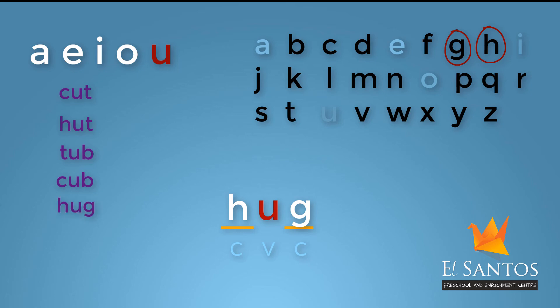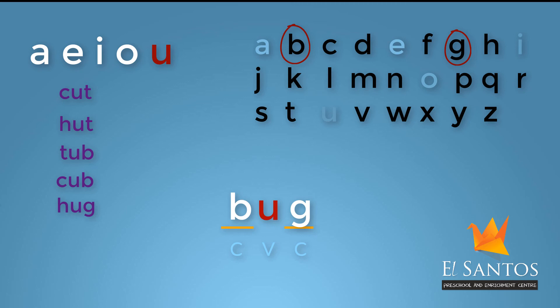For our next word, let's just change the first consonant sound. Remove H and add B. Now it reads as B, U, G — Bug.